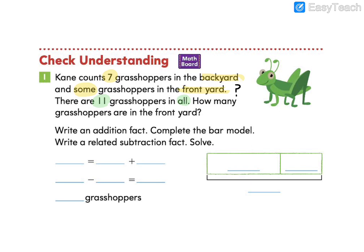Let's go ahead and check your work. If you're feeling stuck, make sure you follow along. So we know that Kane has in total 11 grasshoppers in his yards. So we know that 11 is our whole. He counts seven grasshoppers in the backyard, but only some in the front yard. We need to figure out what that sum is. How are we going to find that? Well, let's think about how many more do we need to get to 11 from seven? 7, 8, 9, 10, 11. So how many more? 4.